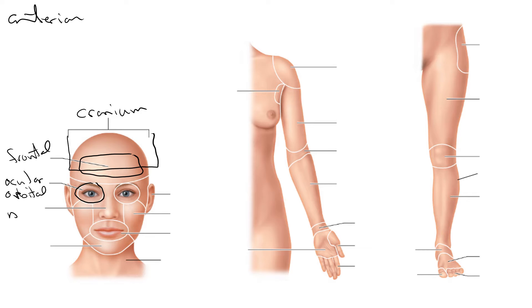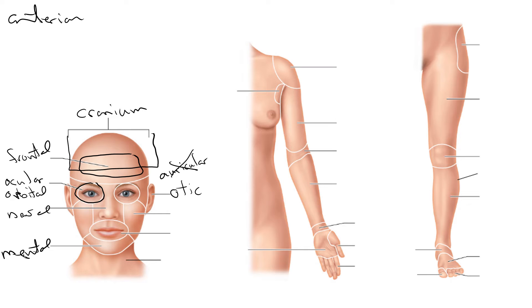The nose is the nasal region. The chin is referred to as the mental region — when you're thinking, you rest your chin on your hand. The otic region is here. Sometimes you'll see people refer to this as the auricular region, but that's not entirely correct. The auricular really refers to just the ear, whereas the otic region refers to the ear as well as the area around the ear. So otic is a better term.